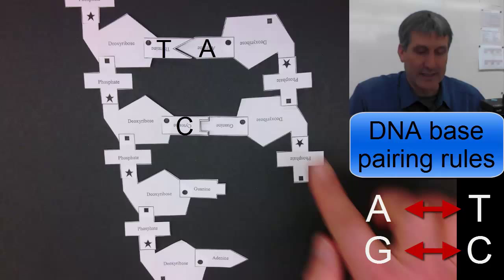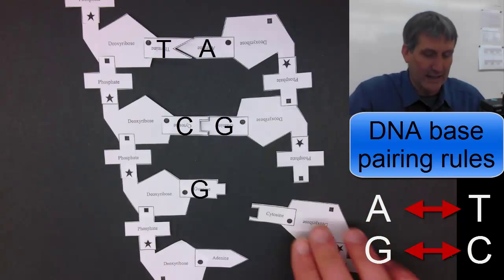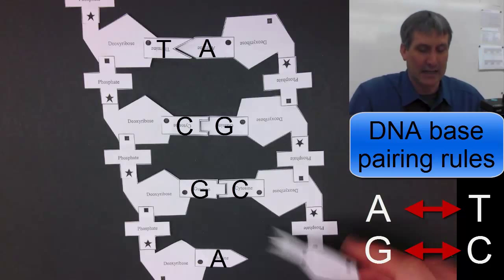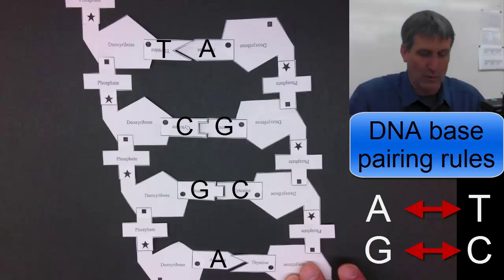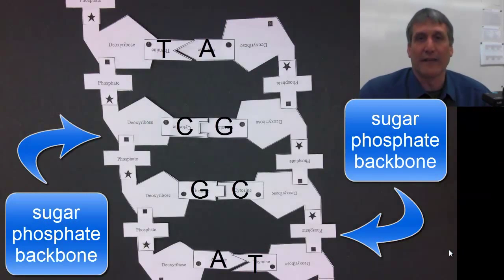On this side we have a cytosine, so over here the second strand would have a nucleotide with a guanine base. We have a guanine, so we would have a nucleotide with a cytosine base. And the last one, we have an adenine, so we would have a nucleotide with a thymine base. So this just represents a very short, small piece of DNA.